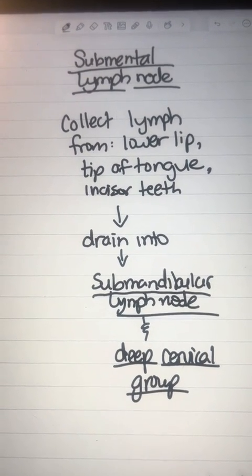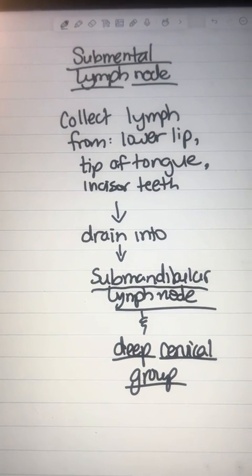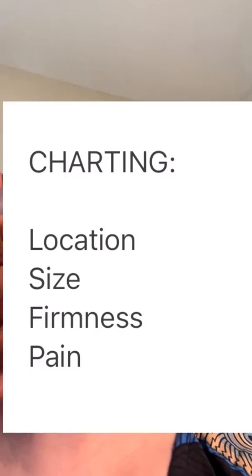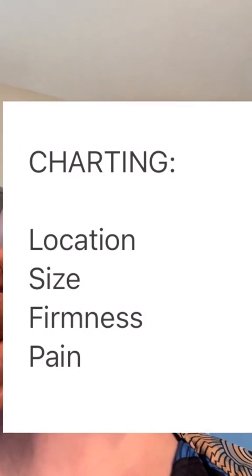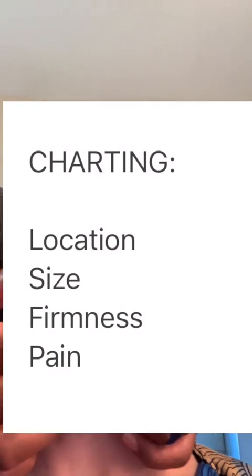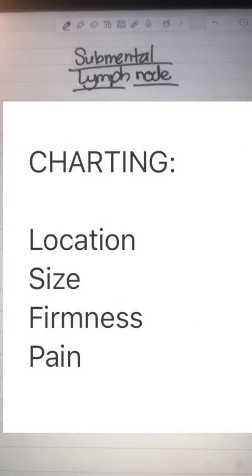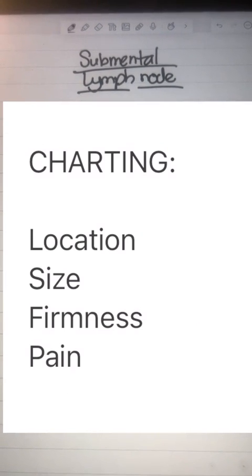Today, because we are going to specifically talk about the submental lymph node, I do want to show you where that is. These lymph nodes are right under the chin. They actually drain into either side of the neck, and the submandibular lymph nodes are probably the closest lymph nodes to them on both sides. The submental lymph nodes actually drain into those areas and then on into the deep cervical lymph nodes. If you're a provider charting about lymph nodes, make sure you chart the location — often that may be the source of infection, wherever it's closest to that area.